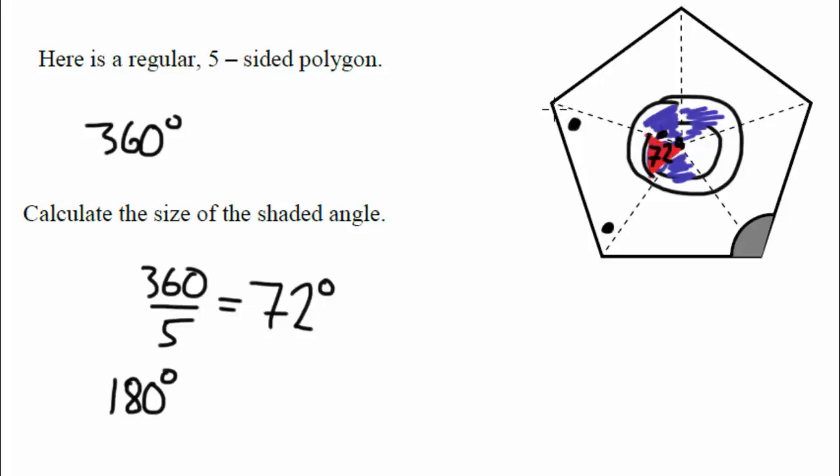And we know that it's an isosceles triangle. So this angle and that angle must be the same. So what we've got is, we can account for 72 degrees of the 180. So if we actually subtract 72 from the 180. Okay, that gives us 108 degrees.